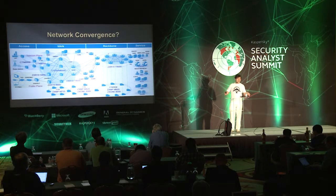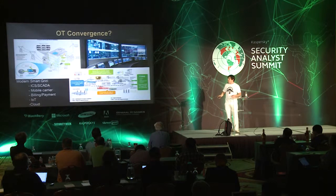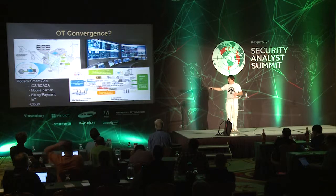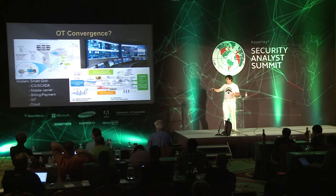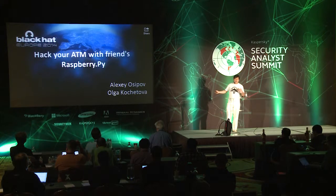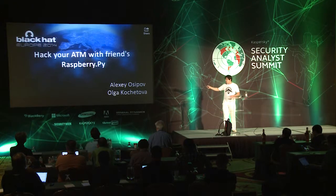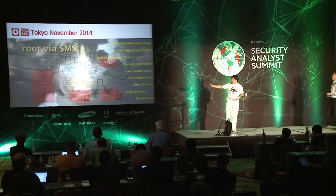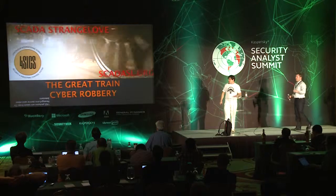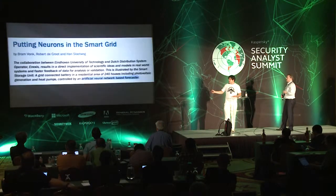Many people speak about network convergence — when different types of systems become connected through TCP technologies. What we see at the moment is operation technology convergence: when different types of operation technologies like SCADA, mobile carriers, payment, internet, cloud, all connect together to manage tasks like smart grids. Over the last year we spoke at different conferences on topics like hacking ATMs at Black Hat, hacking smart SIM cards in Tokyo, and the great train cyber robbery at FOSDEM. This is all about one thing — just a new idea. I'm crazy about it. Thank you.